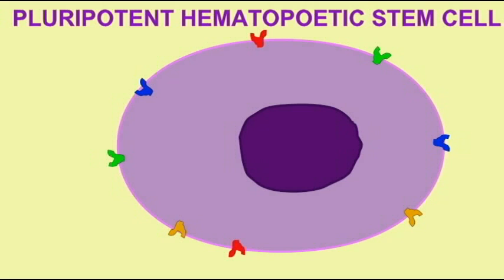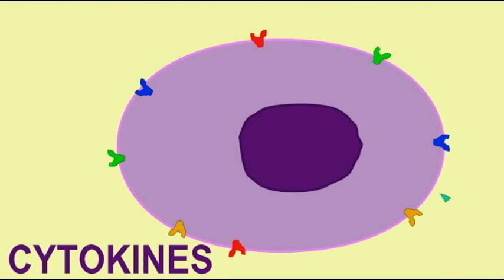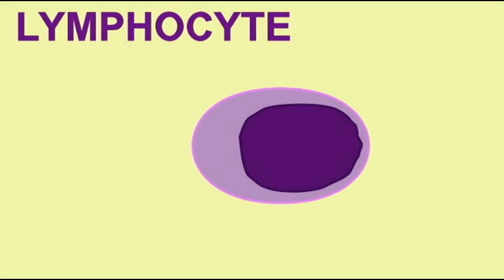Lymphocytes develop from these bone marrow stem cells. These are small cells, typically the size of a red blood cell or smaller. And they have very little cytoplasm with their nucleus composing the majority of the cell. They are responsible for the incredibly complex reactions of the acquired immune response, which we will discuss later.